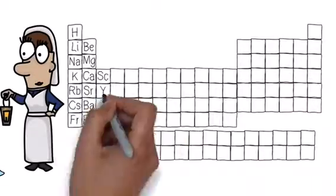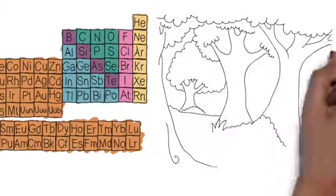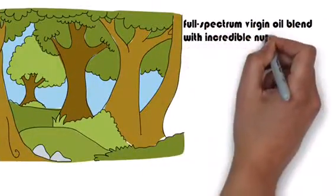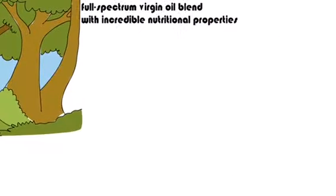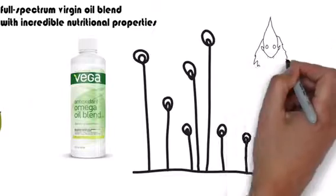The result is a full spectrum virgin oil blend with incredible nutritional properties. Vega Antioxidant Omega Oil Blend is organic, cold pressed, unrefined, and delivers a full spectrum of plant-based omegas.